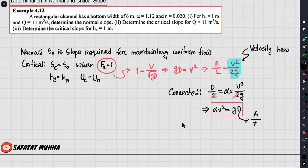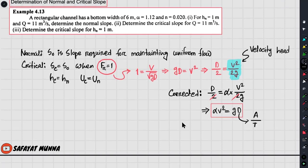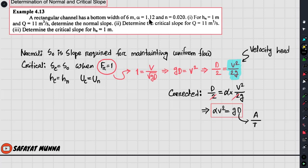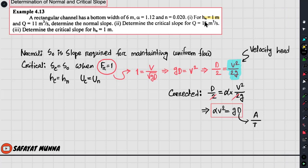Check the slope — if you have uniform flow, we will evaluate the Froude number. We use Manning's formula and the hydraulic radius formula together. If you have a rectangular channel with a bottom width of 6 meters, an alpha value of 1.12, and Manning's n value of 0.020, and if you have a given slope, use the normal slope approach.